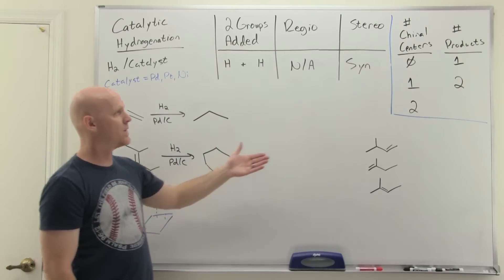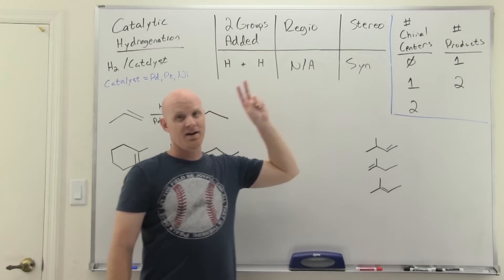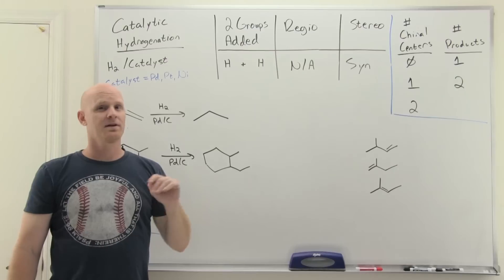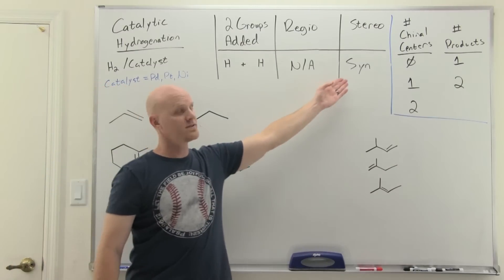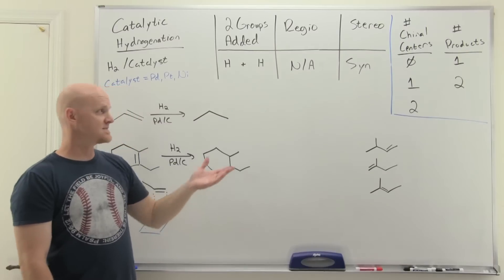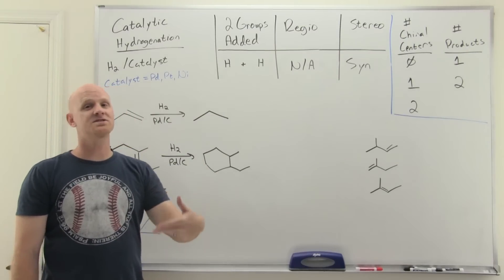Now this is the first example we've looked at where we formed two chiral centers. When you form two chiral centers, you may get as many as four products. But if you have stereoselectivity, you're only going to get two out of the four typically. In this case, this is syn addition. We're only going to get the two syn products.